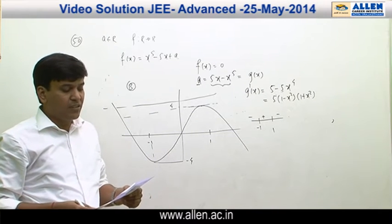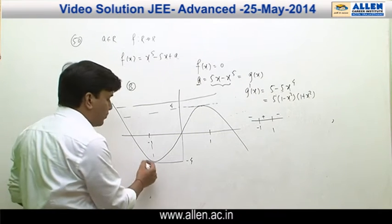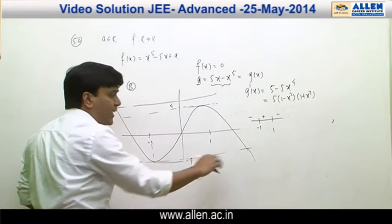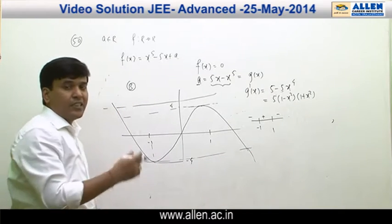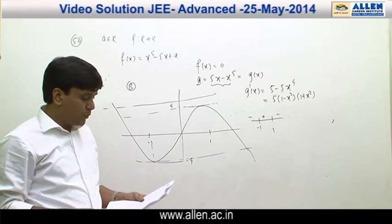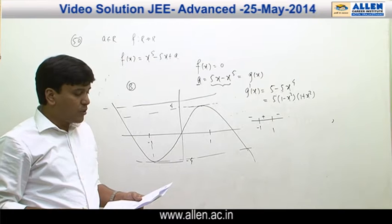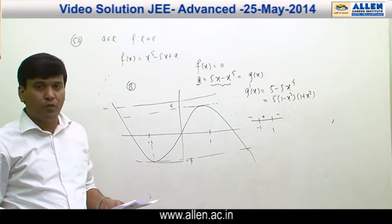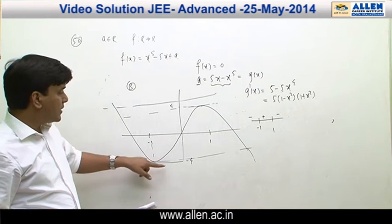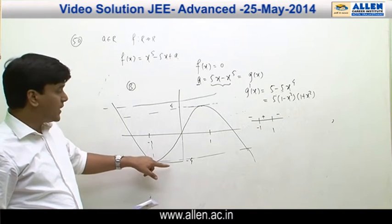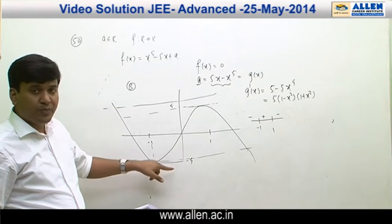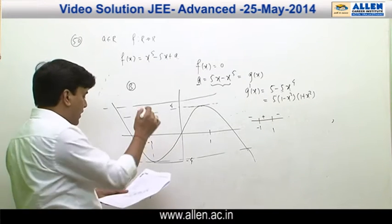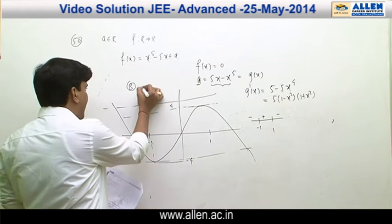Option C says f(x) has 3 real roots for a less than -4. If we take any value of a less than -4, we can see that the equation has only 1 real root. The last option says f(x) has 3 real roots if a lies in the open interval (-4, 4), and we can see that selecting a between -4 and 4 gives 3 real roots. So the correct answers are B and D.